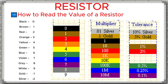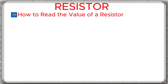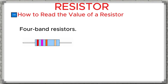Color band resistors commonly come in two formats. One: four-band resistors. They encode two significant digits, then a multiplier band, and finally a tolerance band. Because they show only two significant digits, they are usually manufactured with larger tolerances, commonly 5% or 10%. These are used where very high precision is not required.